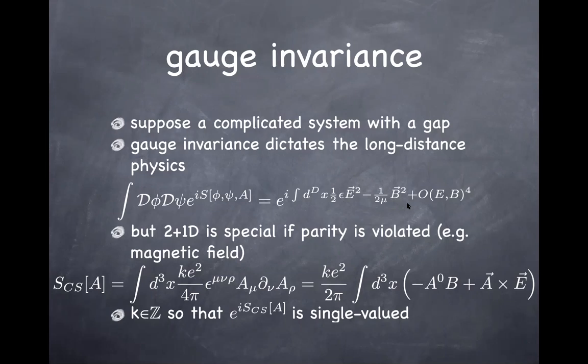What you can do is look at what is called the low-energy expansion. Assuming all degrees of freedom are gapped so you're allowed to integrate them out, the long-distance consequence of the system can be encoded in only a couple of parameters — like dielectric constant and magnetic permeability. This is an extremely useful way of looking at whatever system you're studying.